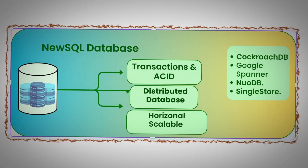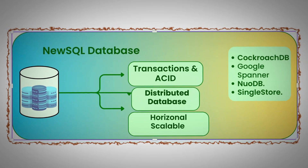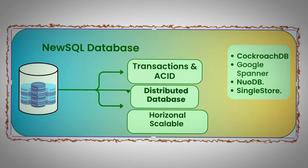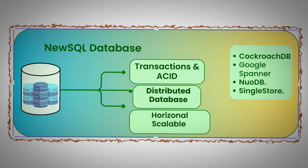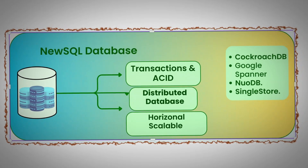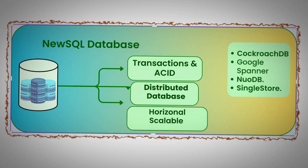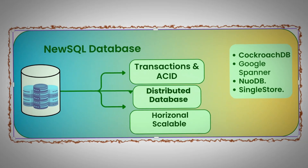NewSQL databases such as CockroachDB or Google Spanner are based on horizontal scalability principles and are distributed databases. Whatever we want to do in terms of ACID compliance, they are able to do so, and if we are dealing with scale, they are able to handle that scale as well.